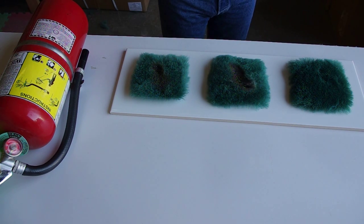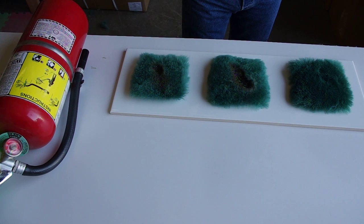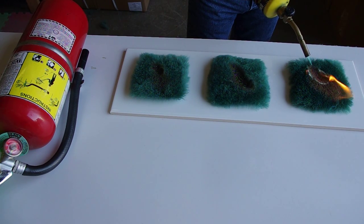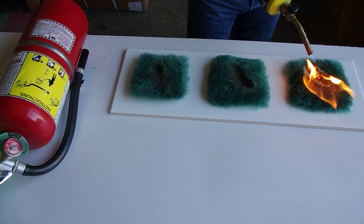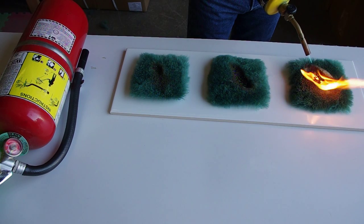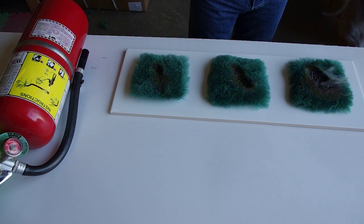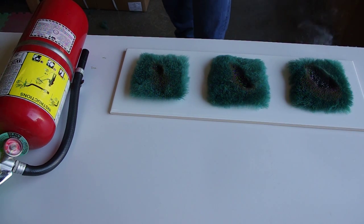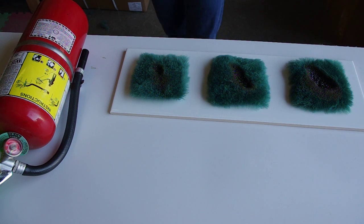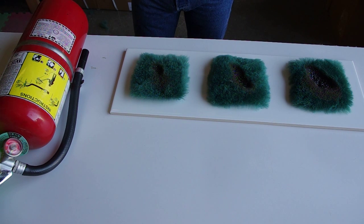On the third piece, we are going to perform a ten-second burn, and that will begin now. You can see that the flame did not transfer laterally. The product self-extinguished within one second. And you can see that the only byproducts produced when burning Australian medical sheepskin is smoke and ash.